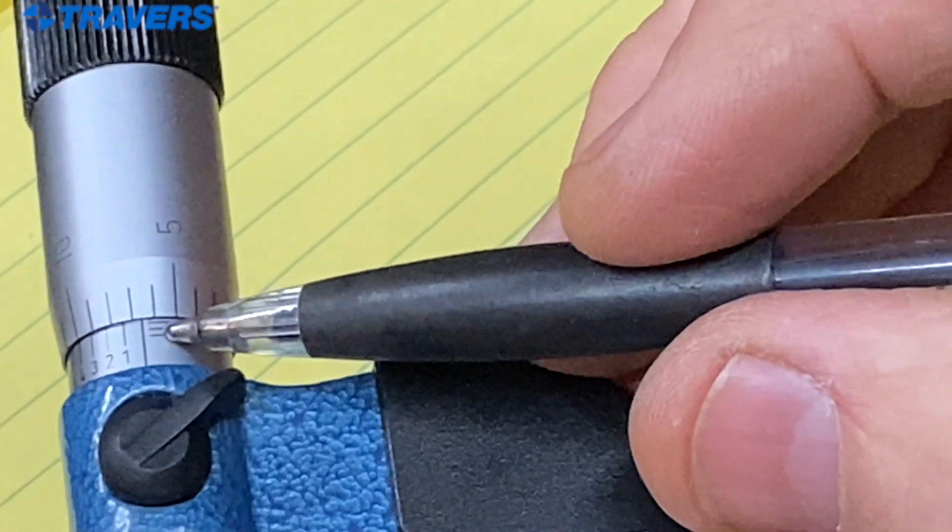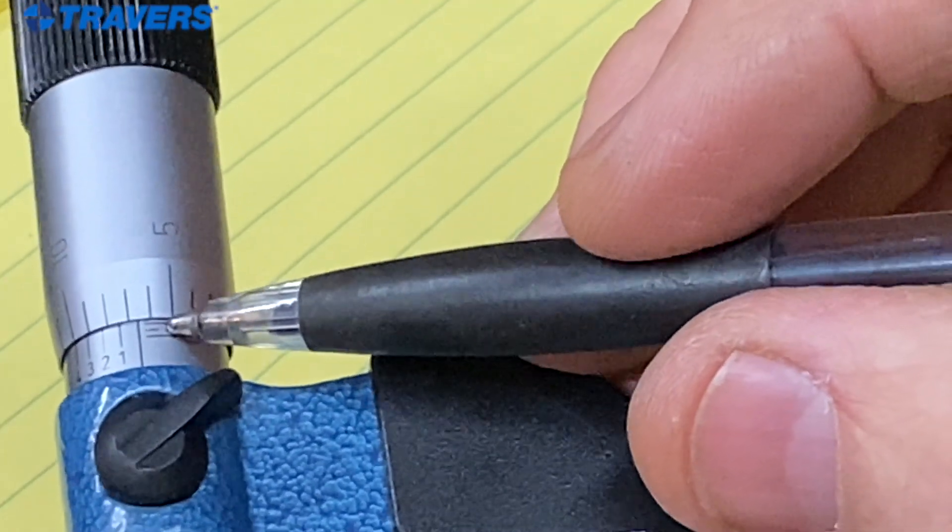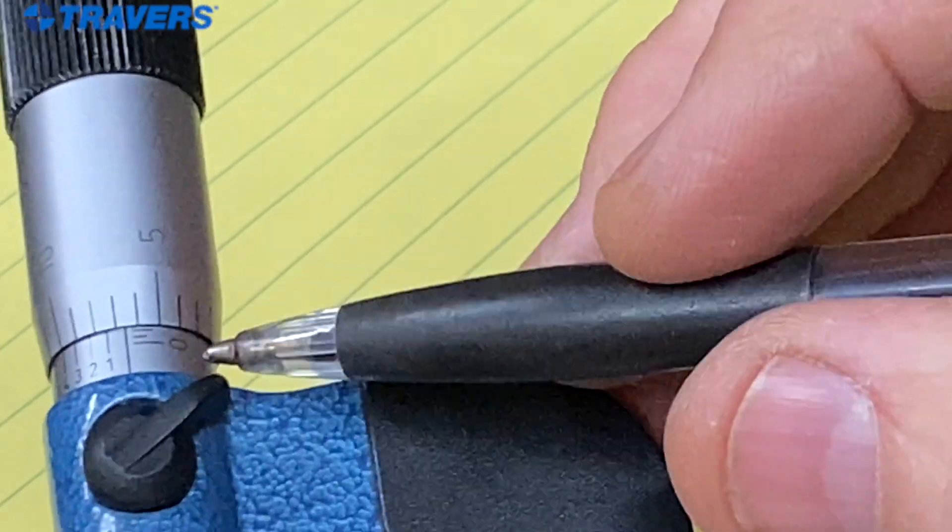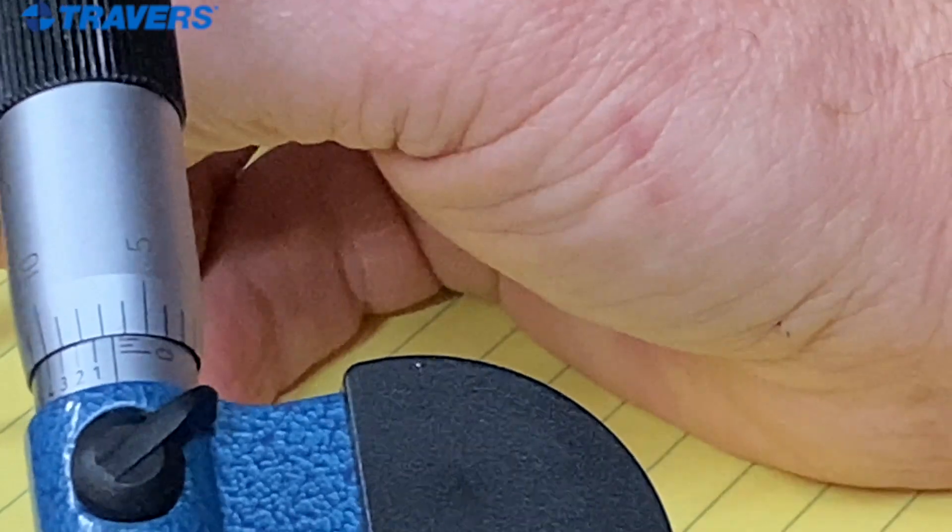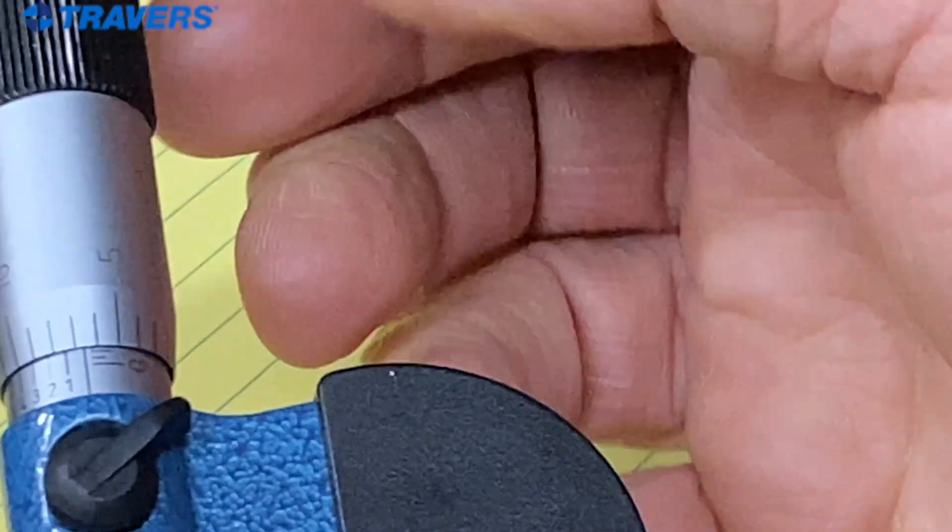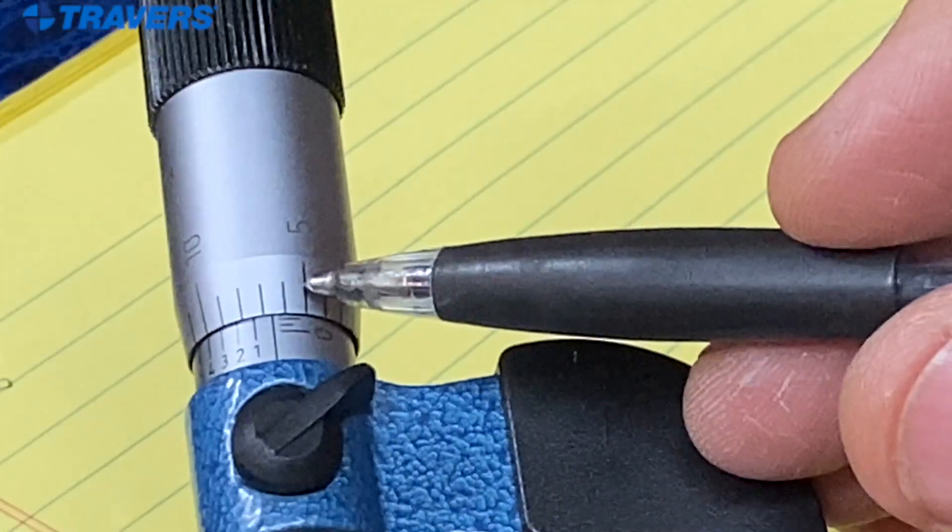Here's a zero. There's one line. Here's a second line. And again, each line is 25 thousandths. So two lines makes it 50 thousandths. So I'm going to write down 0.05.